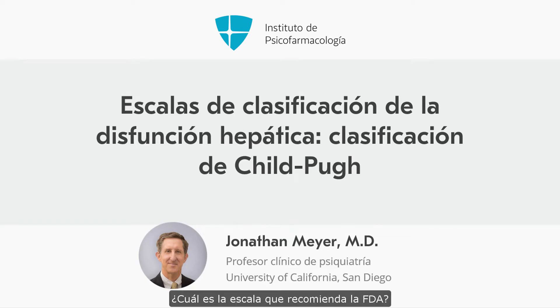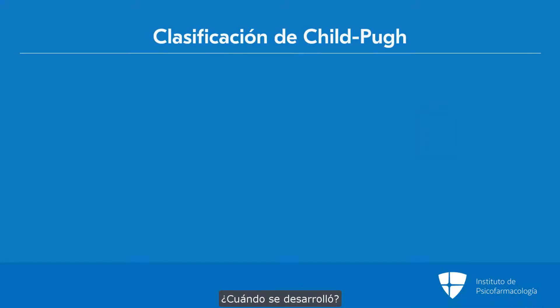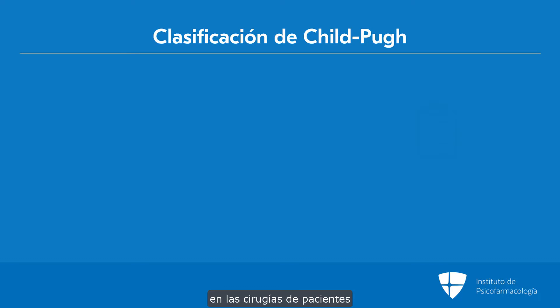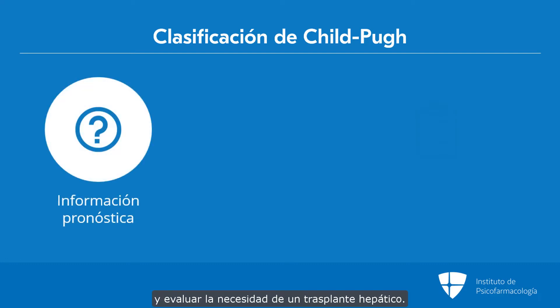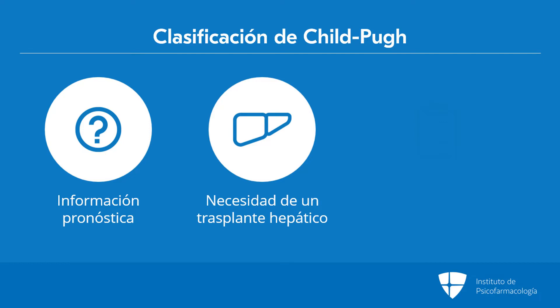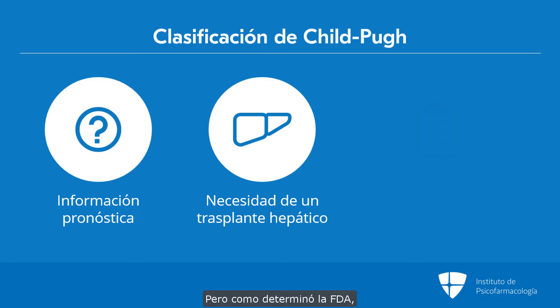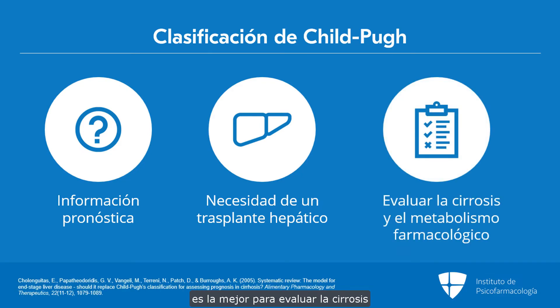So now you're wondering, what is the scale the FDA is recommending in its Child-Pugh? Where did this come from? This scale, which is now in every modern package insert, was originally developed in 1964 to predict mortality during surgery in patients with advanced liver disease and was then modified in 1972. It's used for prognostic information and necessity of liver transplantation. There are other scales also used, such as MELD. But as the FDA found out, Child-Pugh is perfect for our purposes in terms of assessing cirrhosis and the extent to which it alters drug metabolism.